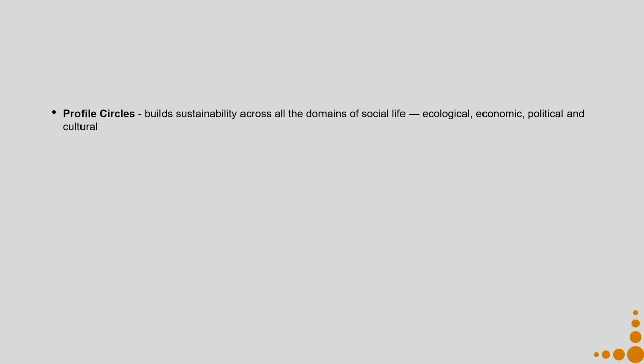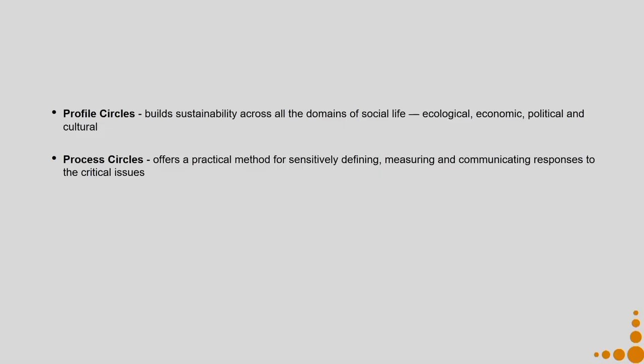Profile Circles help to build sustainability across all domains of social life. As we have been discussing throughout this course, the dimensions of sustainability are ecology, economy, and social. In this particular context, since our focus on social aspects is quite significant, we divide social into two: political and cultural. This also makes sense because we are talking specifically about cities and communities — hence the bifurcation into political and cultural of the social dimension becomes a very effective way of dealing with this context. Process Circles offer a practical method for sensitively defining, measuring, and communicating responses to critical issues.